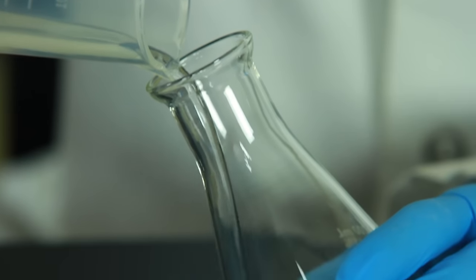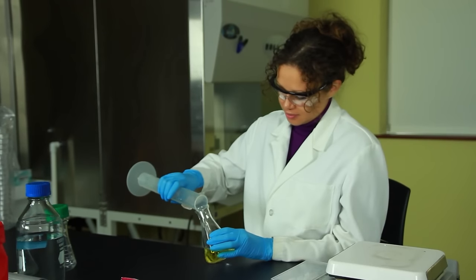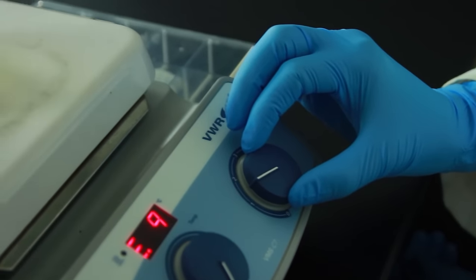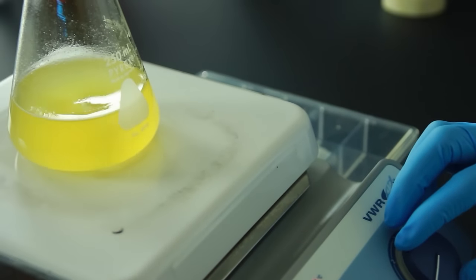After about 2 minutes, add the remaining 25 milliliters of water from the graduated cylinder. Stir the solution until all of the visible clumps have been broken down.